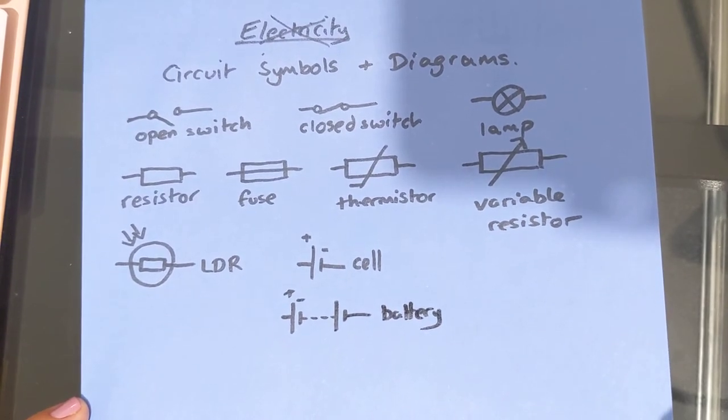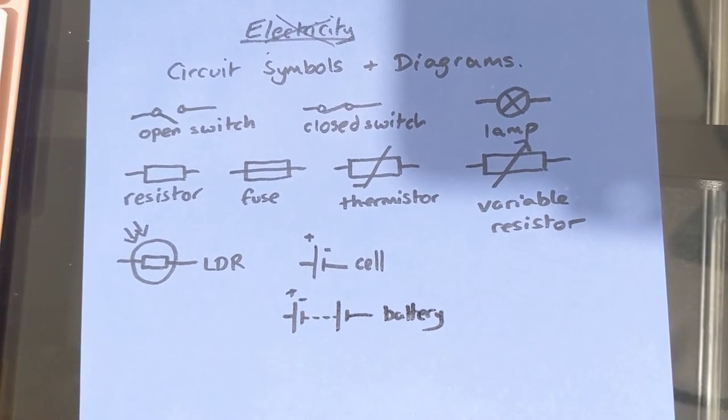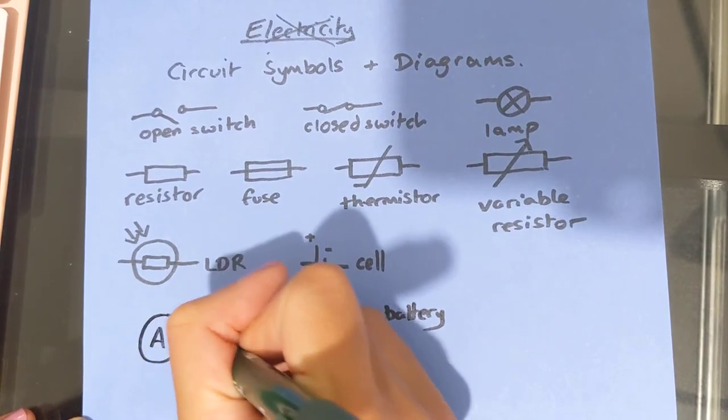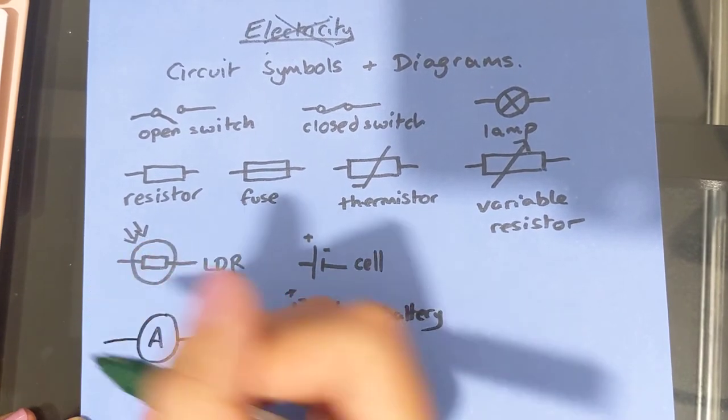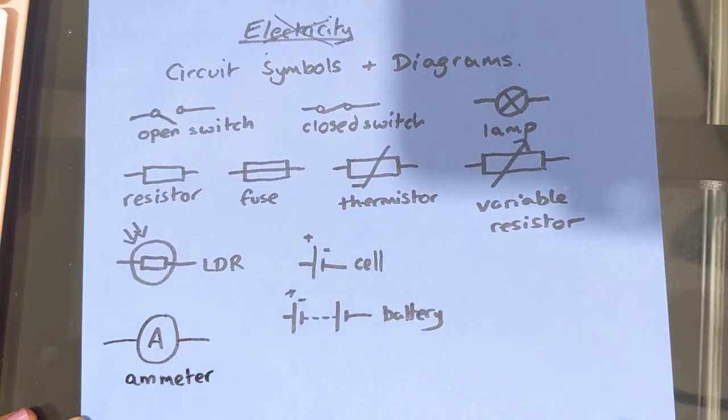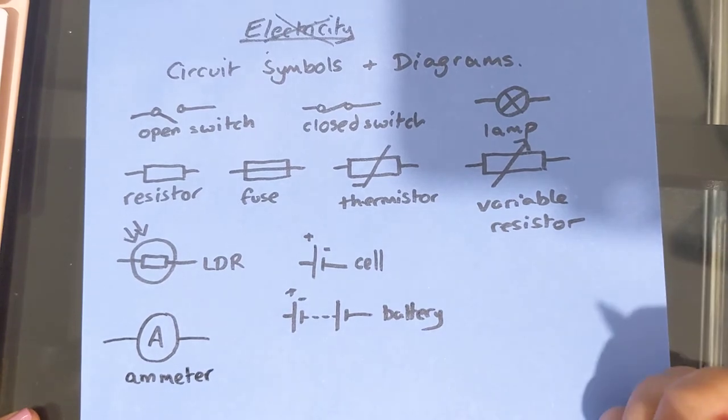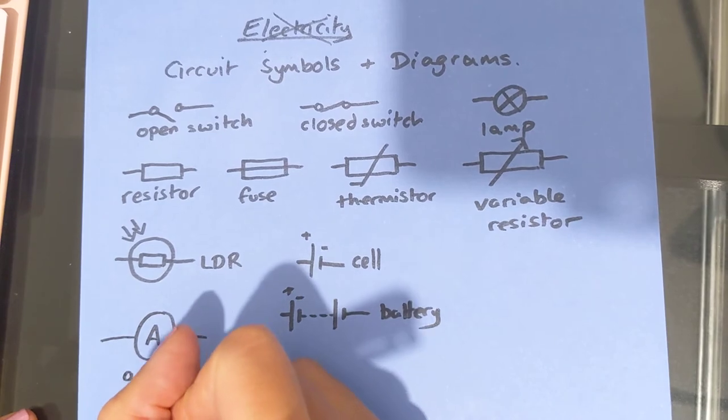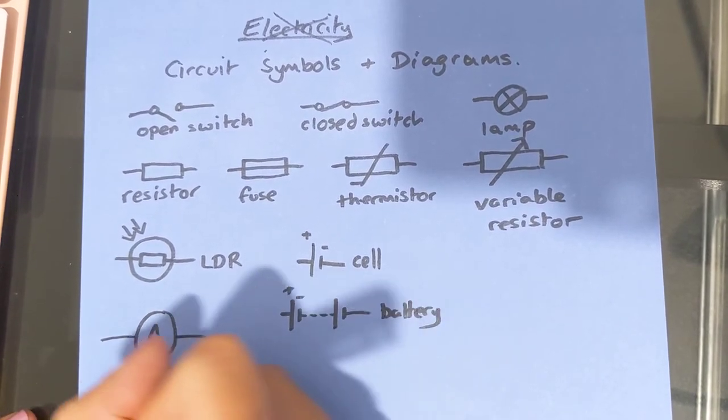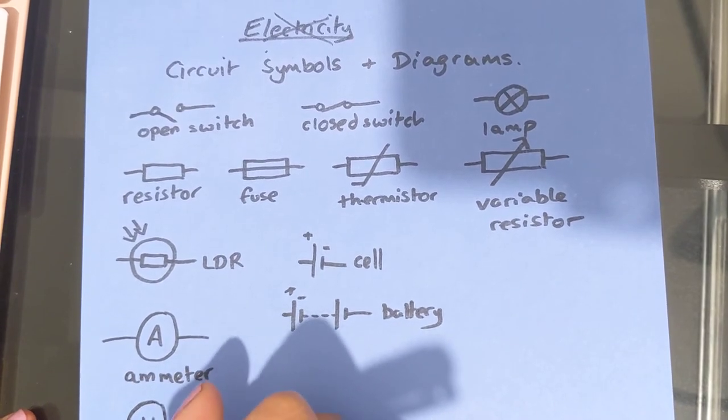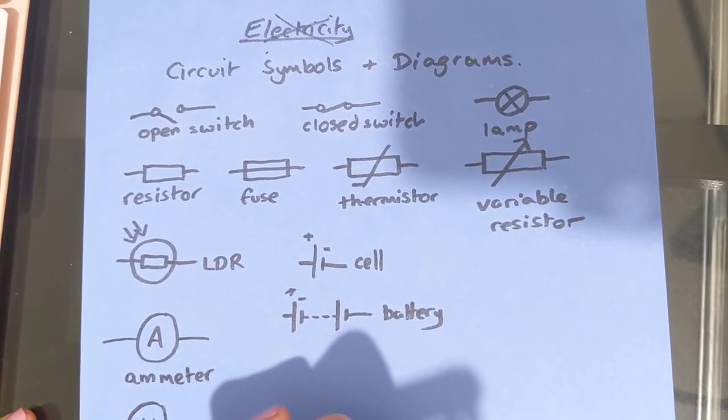There's a couple of symbols we use to measure certain quantities within a circuit. So if we are going to measure the current, we would use an ammeter. So that is a capital A, circle around it. Must be a capital A. And if we are going to measure the potential difference across a cell or across a component, we would use a voltmeter. So capital V, circle around it, like so. We used to call it voltage, now we call it potential difference.